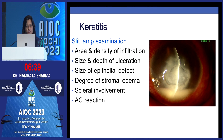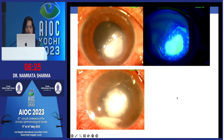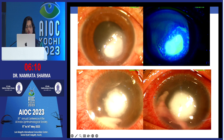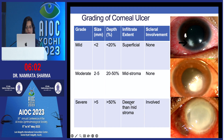It is important to do a good slit lamp evaluation and look at the area and density of the infiltration, size and depth of the ulceration, degree of stromal edema, scleral involvement, and anterior chamber reaction — and to record this at every visit. Note the difference between the size of the epithelial defect and size of the stromal infiltrate. Also monitor whether the hypopyon is fixed or mobile, since fixed hypopyon is described for fungal keratitis. Ulcer size can be less than 2, 2 to 5, or more than 5 mm.